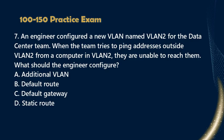Question 7: An engineer configured a new VLAN named VLAN2 for the data center team. When the team tries to ping addresses outside VLAN2 from a computer in VLAN2, they are unable to reach them. What should the engineer configure? a. Additional VLAN, b. Default route, c. Default gateway, d. Static route.